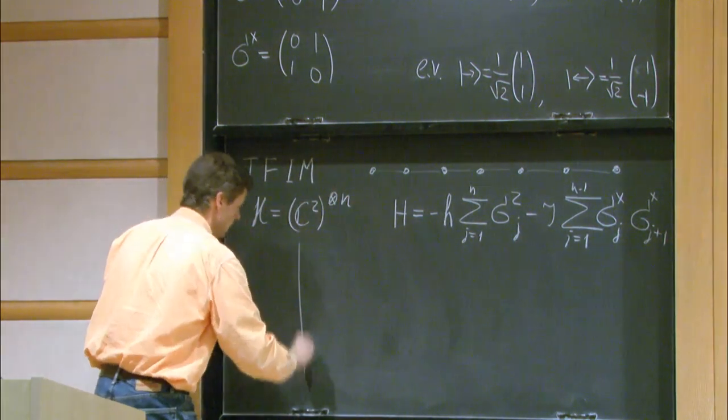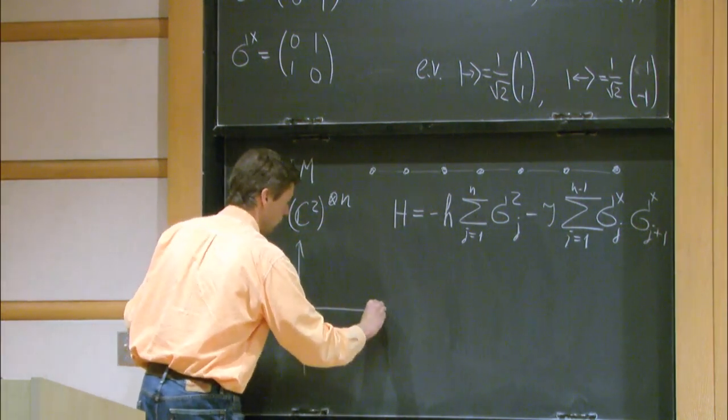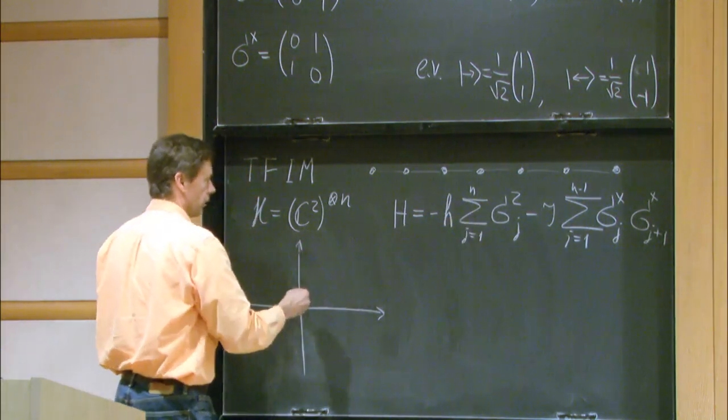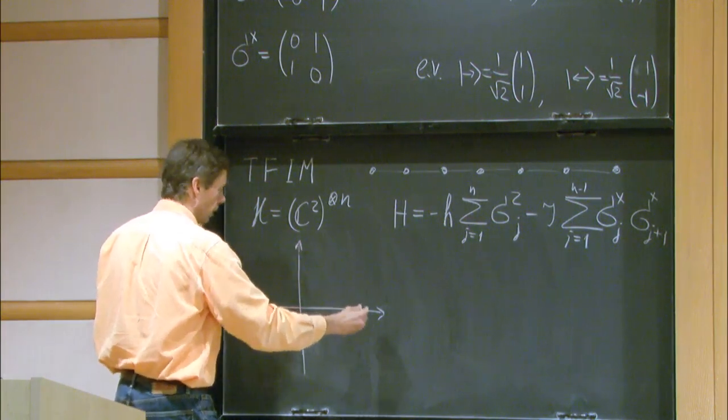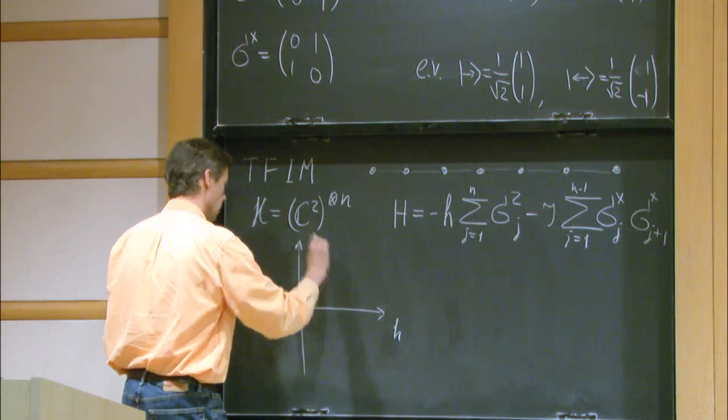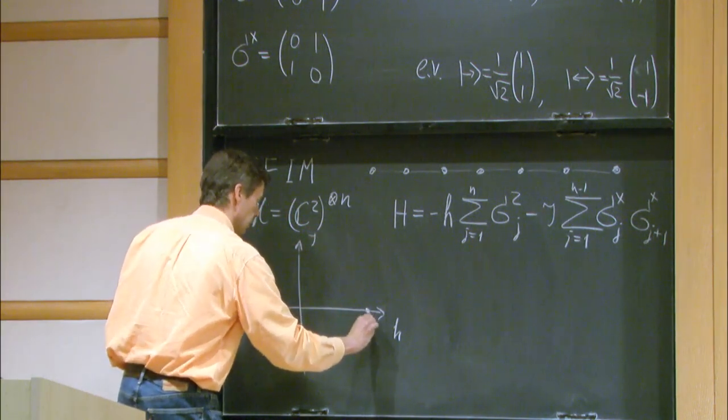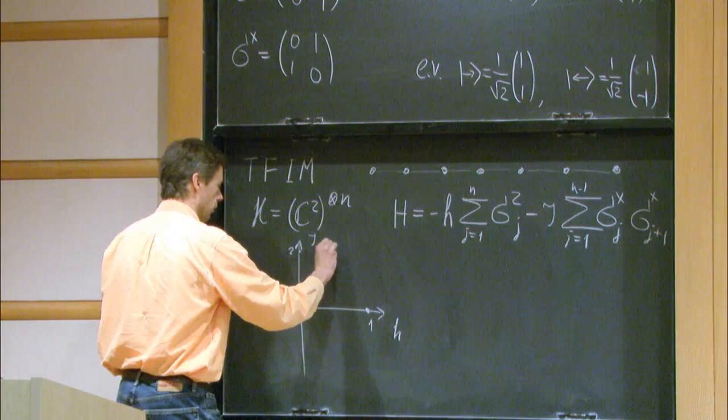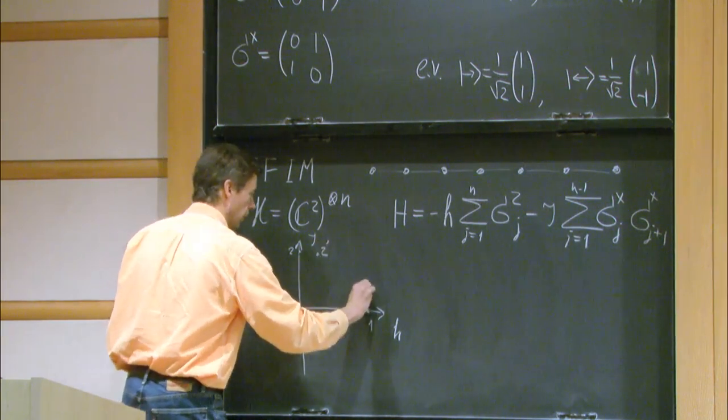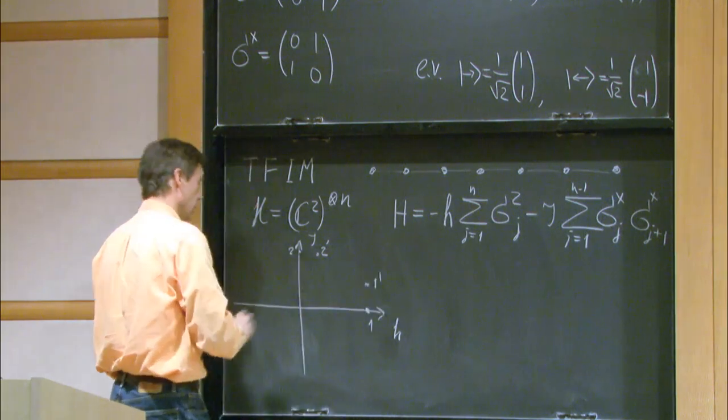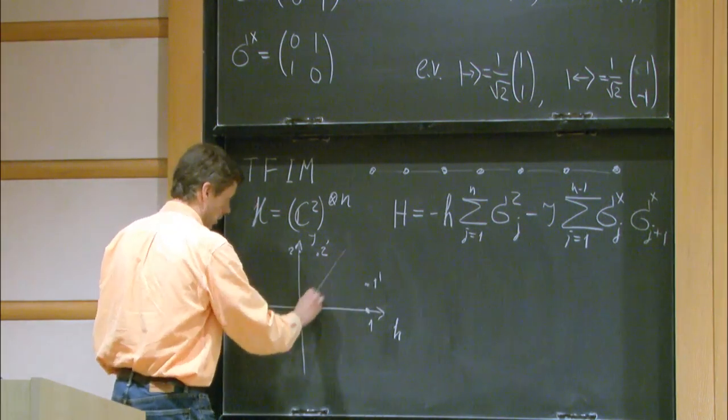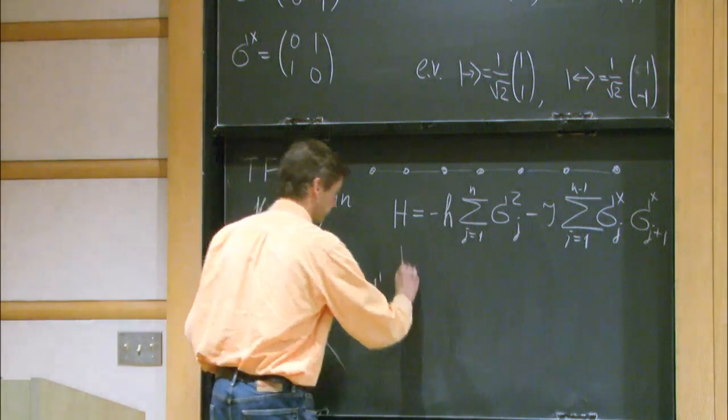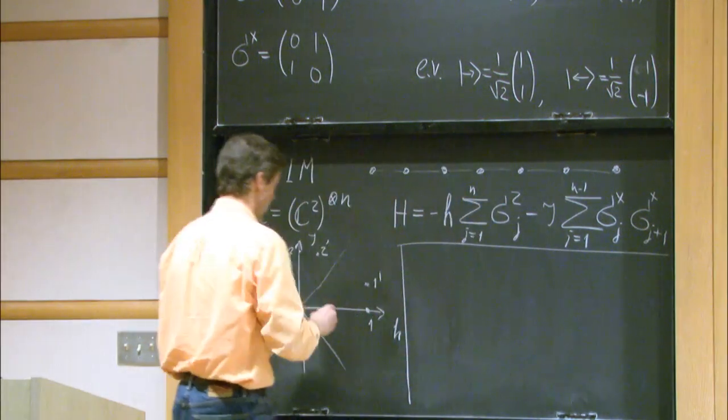And we want to construct the phase diagram of the system in terms of parameters H and J. So in this case, we have a two-dimensional space of Hamiltonians. But not all these Hamiltonians are equally good. Some of them are better at certain values of parameters. The system has bad behavior. So let's write H and J and put some points which we will study. This is point 1, this is point 2, and there will be some point 2 prime and 1 prime. And I'll draw these lines. You'll see what they mean.